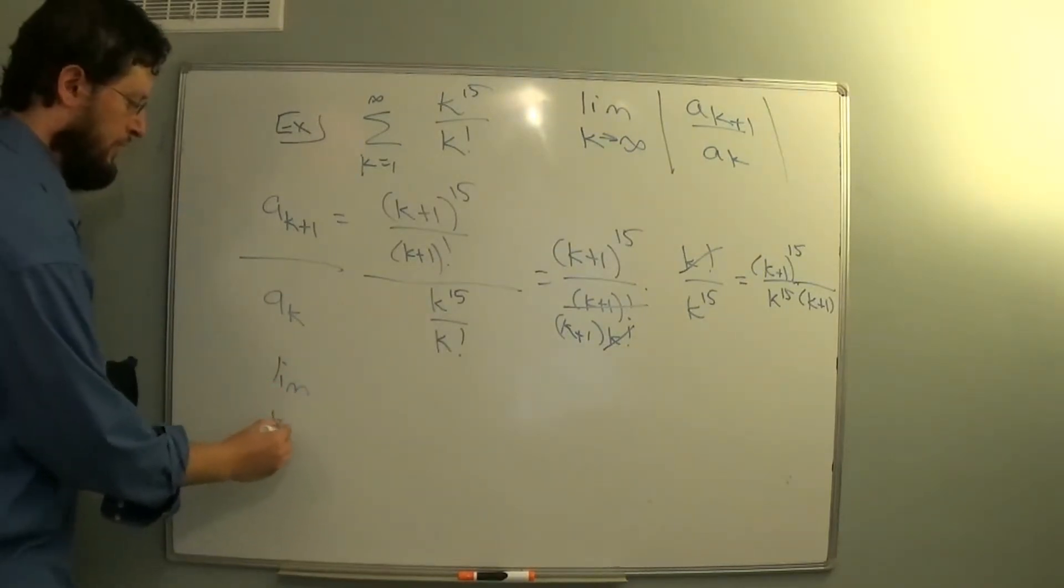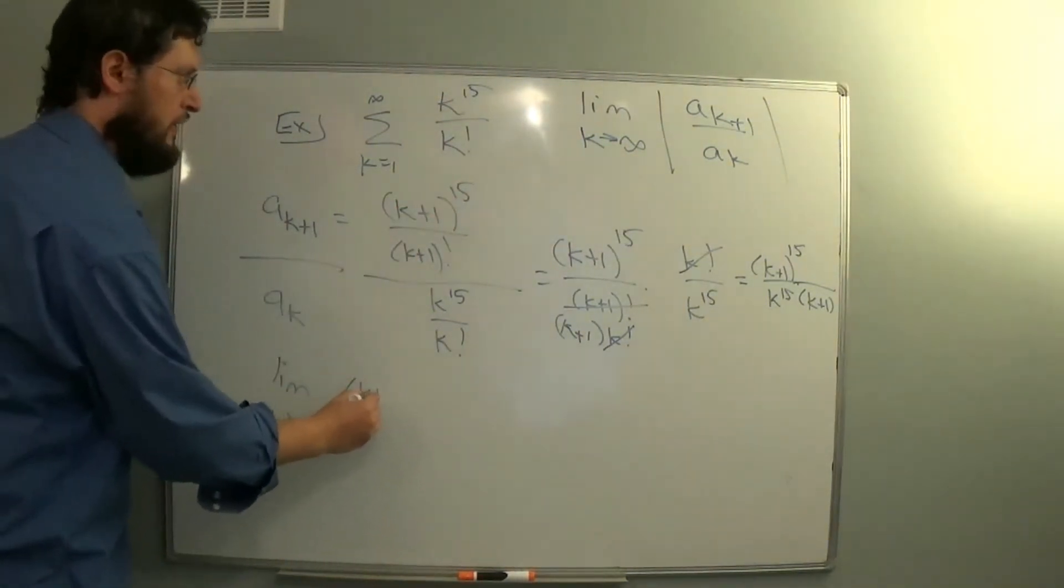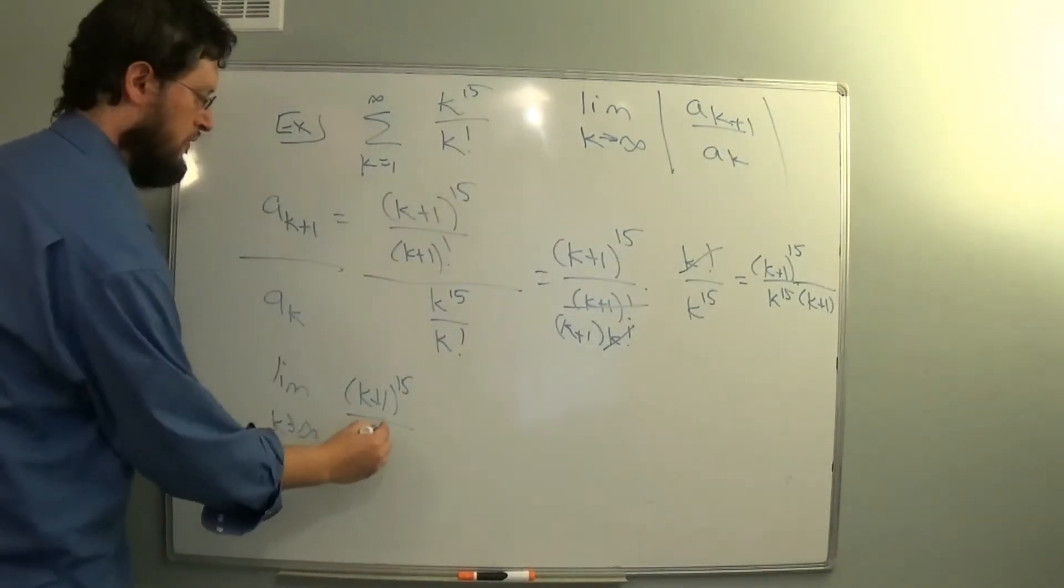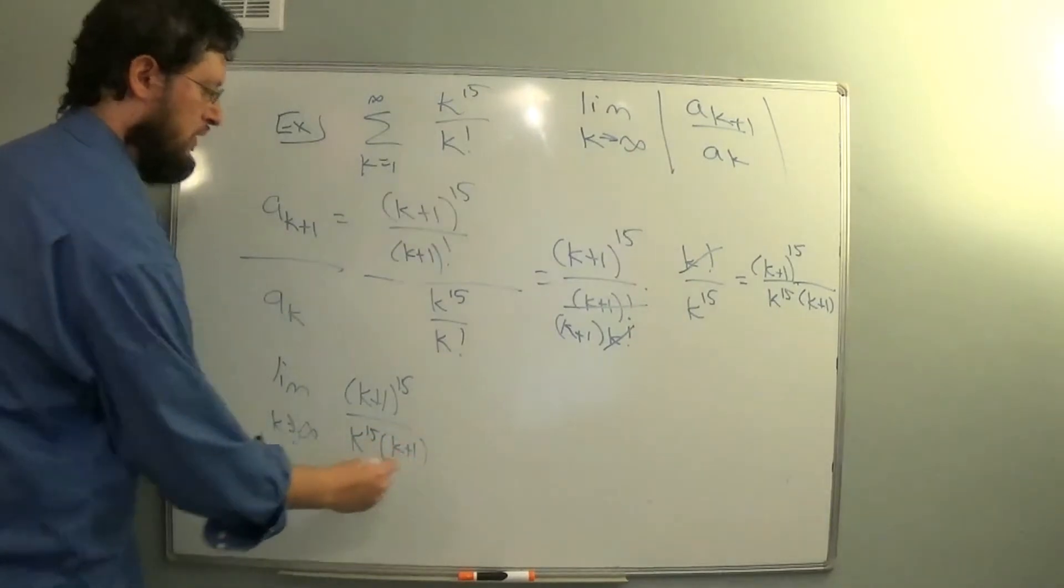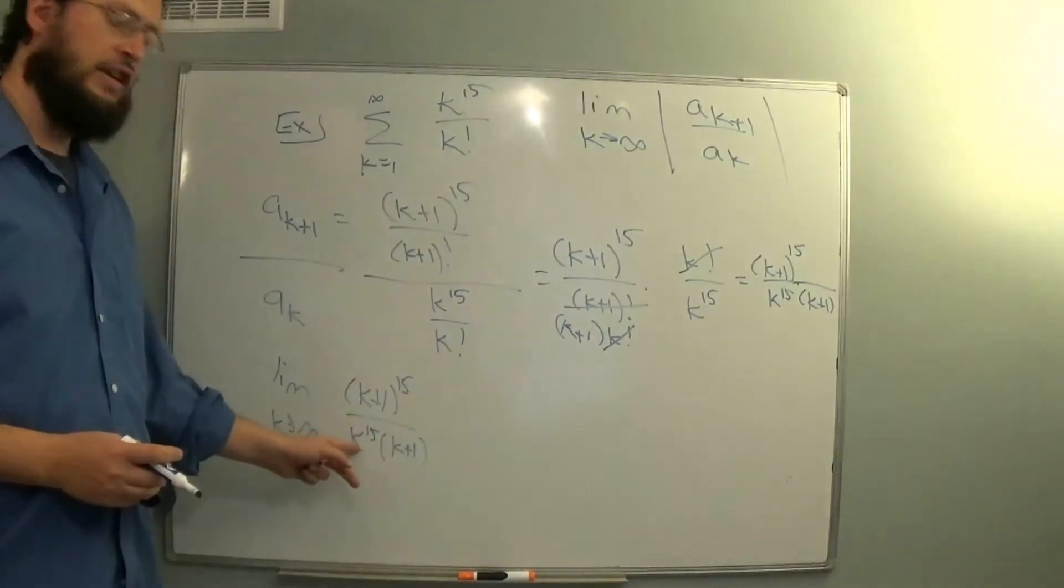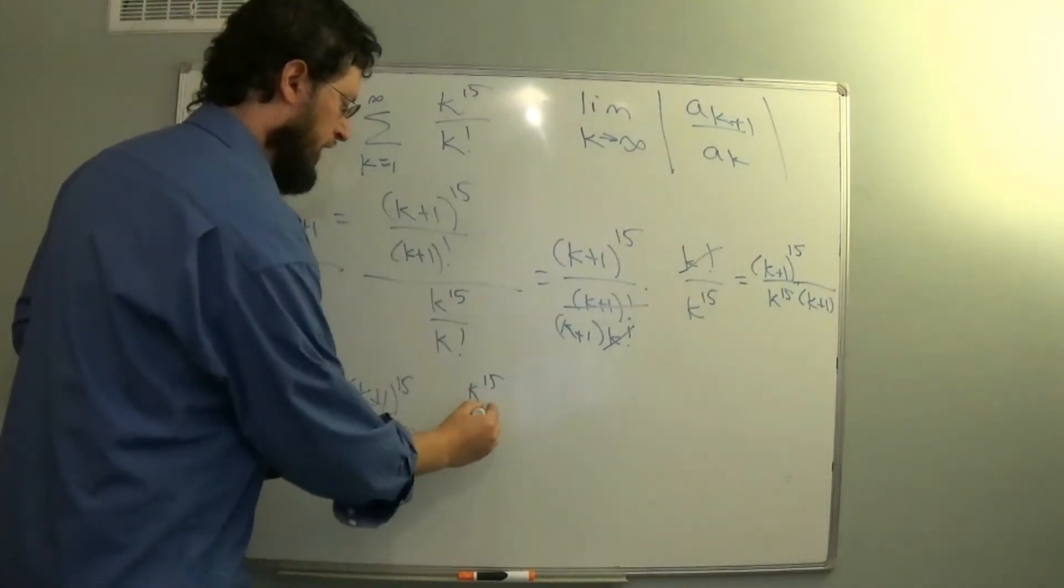And then we take the limit as k goes to infinity of that. Well the numerator has k to the 15, the denominator has k to the 15 times k. So that's k to the 15 over k to the 16.